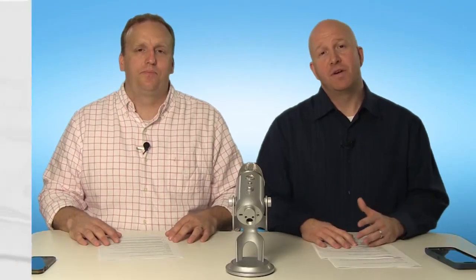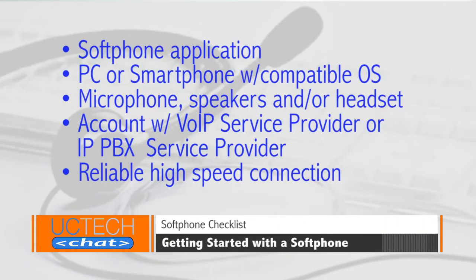All right, so let's recap. Jason, what do you need to deploy a soft phone? To deploy a soft phone, you need the following: a soft phone application, a PC or smartphone with a compatible operating system, a computer and microphone with speakers or a headset, an account with a Voice over IP service provider or an IP PBX service provider, and a high-speed reliable connection. Let us know if you have any further questions at hashtag UCTechChat and we'll get those questions answered for you.